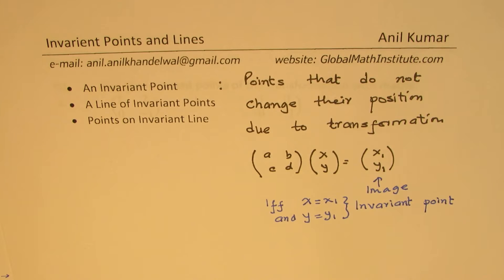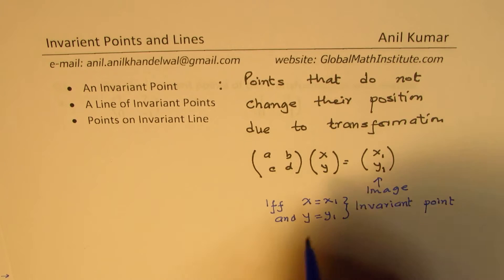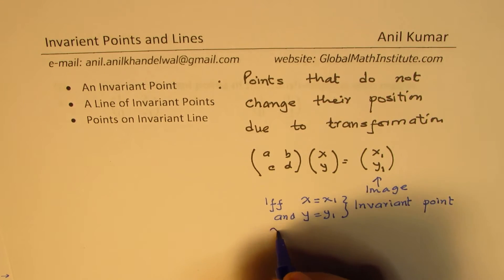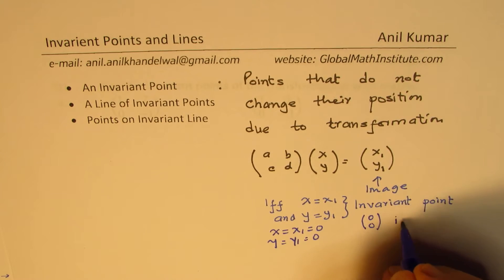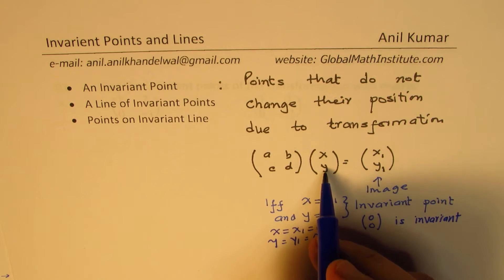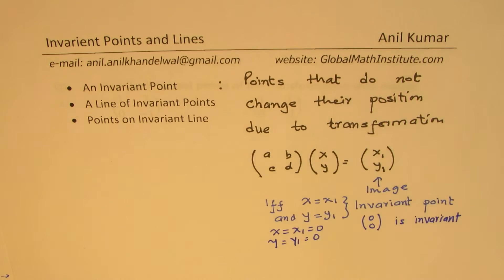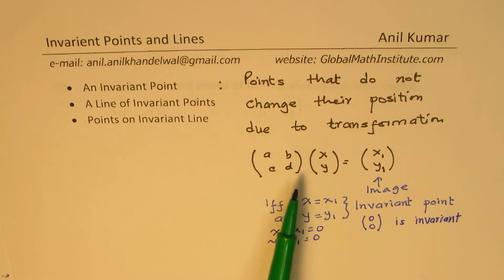That's the whole idea. Looking into this, you will notice that if x and y are 0, then origin is always an invariant point. Notice that (0, 0) is invariant — if I replace x and y with 0, then whatever the matrix is, we get an invariant point. So under such transformations, origin is an invariant point.